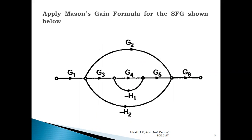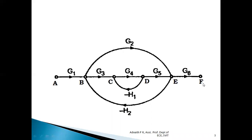Whenever a signal flow graph is given to us, what we have to do is we have to name the nodes which are present in our signal flow graph. Let us name the nodes as A, B, C, D, E, F. It is not mandatory, but it will be very useful for us to solve the problem.